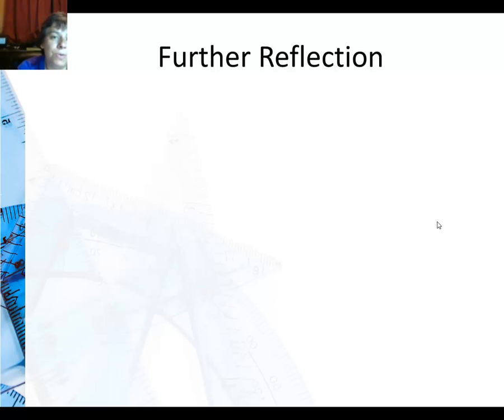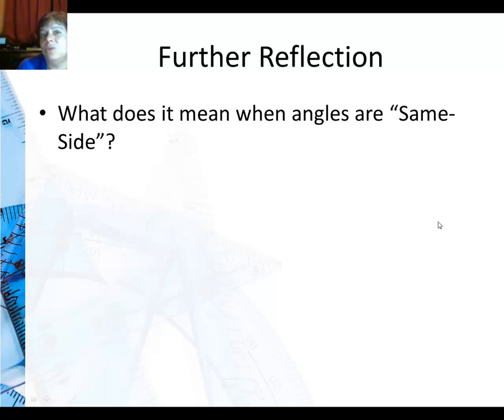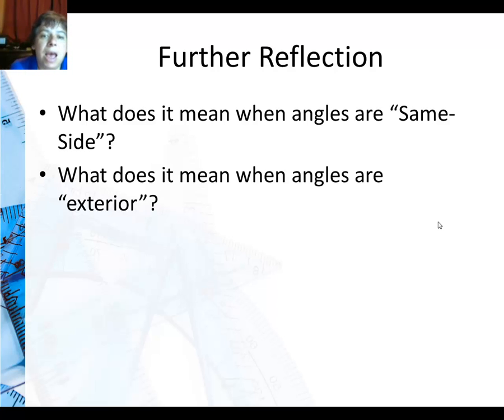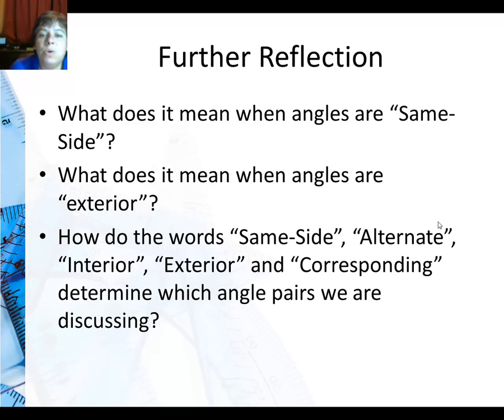So for further reflection, what does it mean when angles are same-side? There are two different types of pairs that work with that. How about when angles are exterior? How do the words same-side, alternate, interior, exterior, and corresponding determine which angle pairs we are discussing?